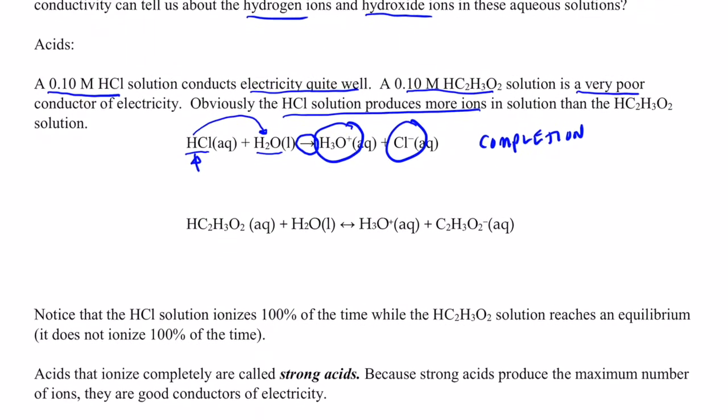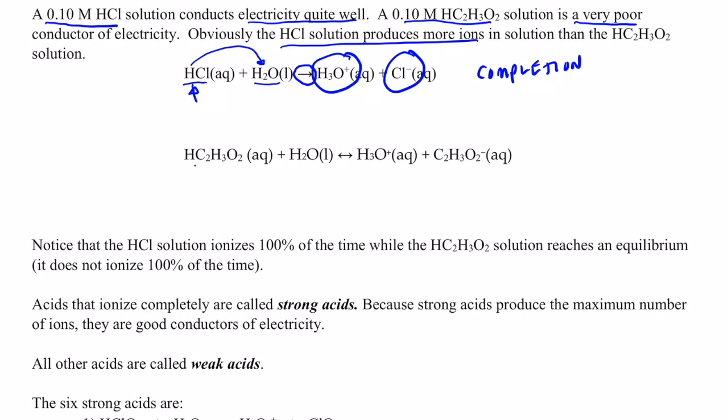Now, if we take a look at acetic acid, HC2H3O2, and we react it with water, this hydrogen will be gained by water some of the time to produce the hydronium ion and acetate ions. This does not go to completion. Notice the arrow goes both ways. This reaches what we call an equilibrium before it reaches completion. So we call these acids that do not ionize 100% or to completion, we call the acids weak.